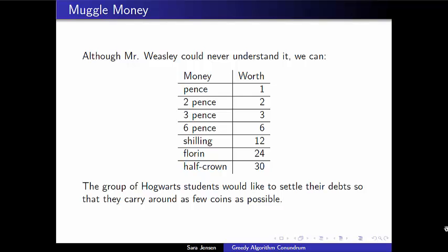The second problem I'd like to talk about today is using that muggle money that Mr. Weasley has so much trouble with. I'm talking about the muggle money they had in Britain in the 1970s. It's a fun system, and it's understandable why Mr. Weasley was confused by it, especially if you live in America, as I do.